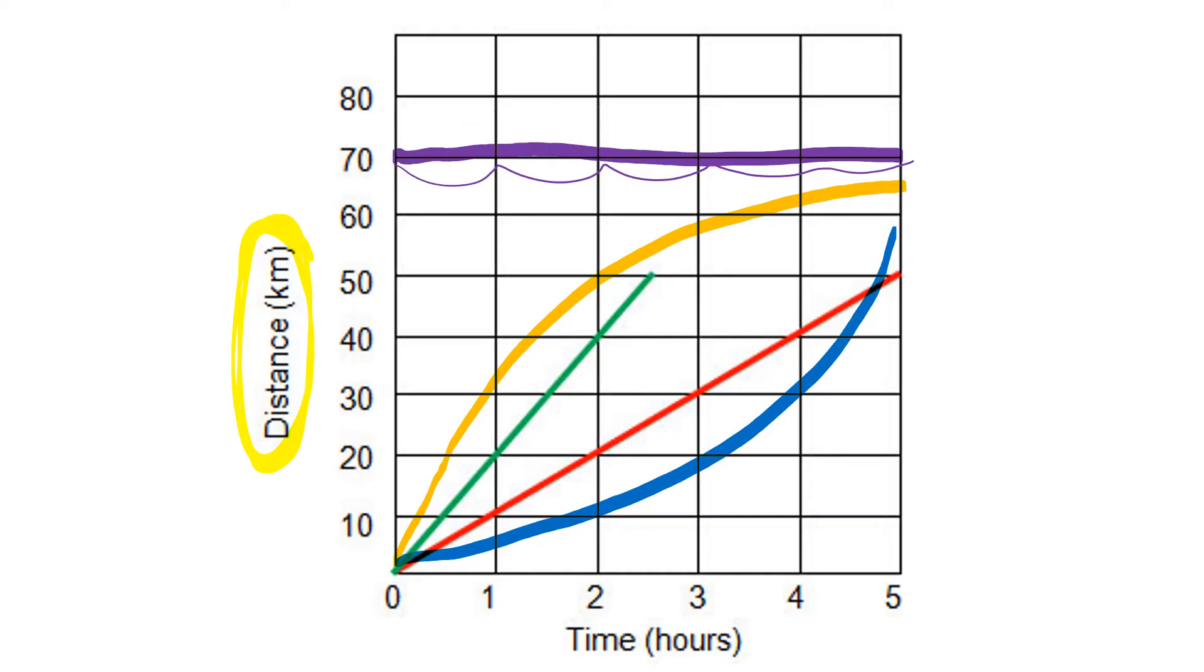Okay, time is passing. The line is not changing - it's still at 70 kilometers. So here I am not moving at all. I'm staying 70 kilometers away from wherever I started, and time is passing and I'm still at 70, still at 70, still at 70. So I did not move at all.